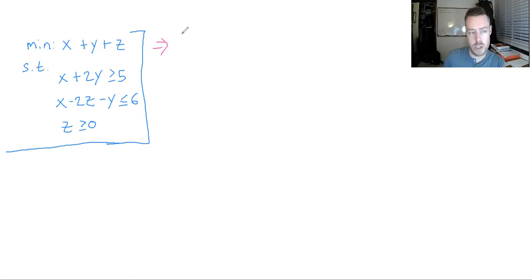So in order for us to really kind of go forward with this, we need to change it into a maximization problem. Well, how exactly do you change it from a minimization problem to a maximization problem? Well, it's really simple. You actually multiply your objective function by negative one.